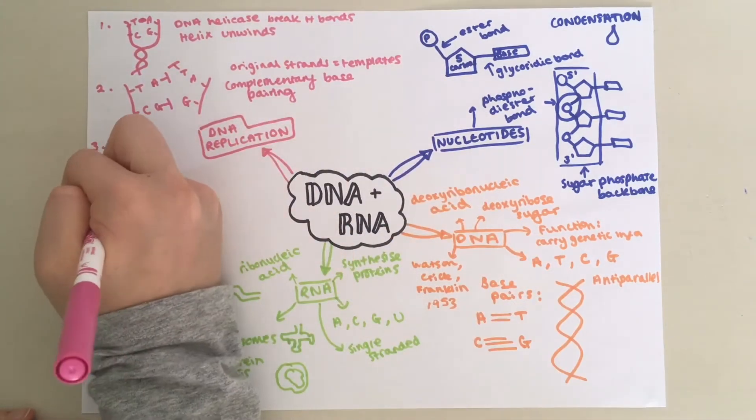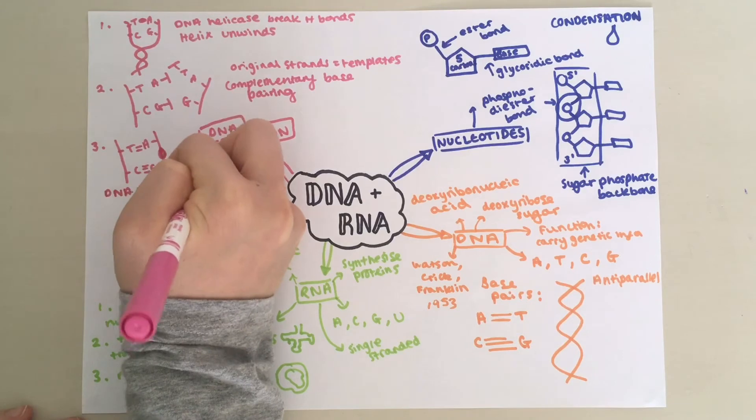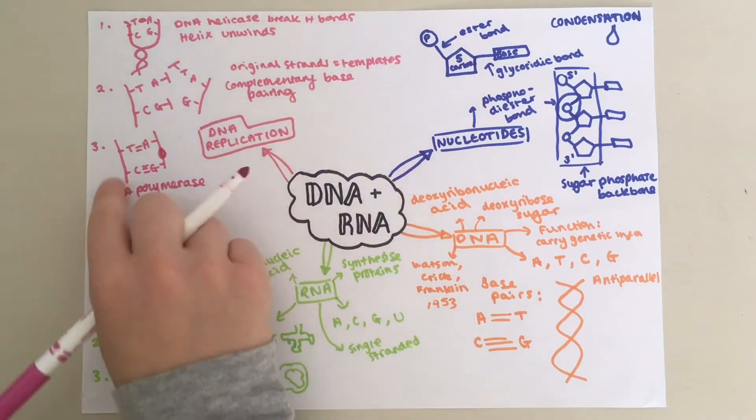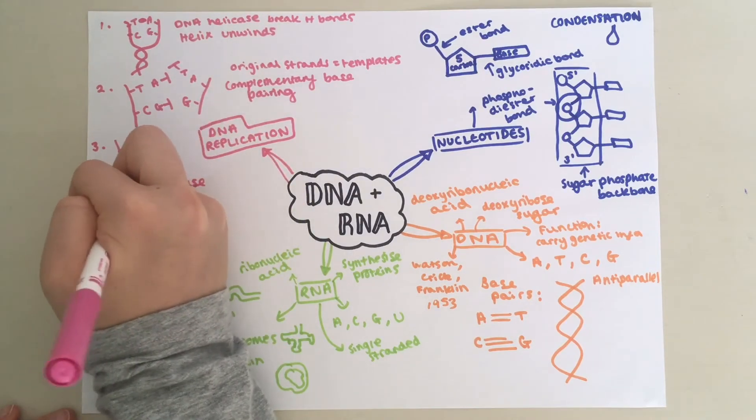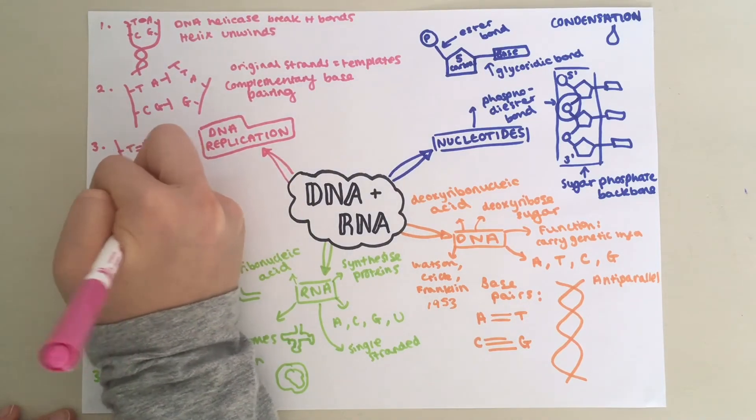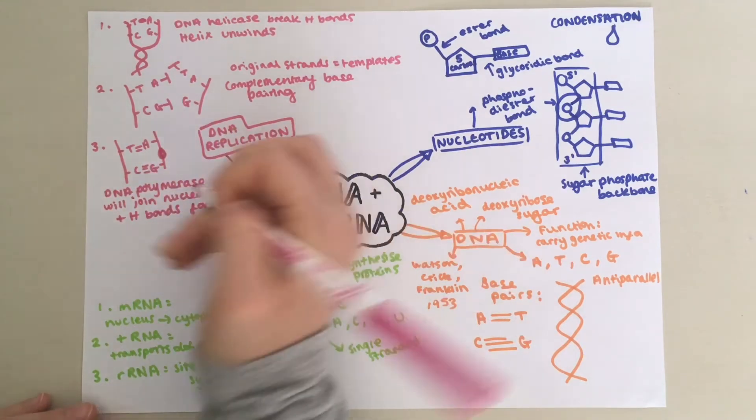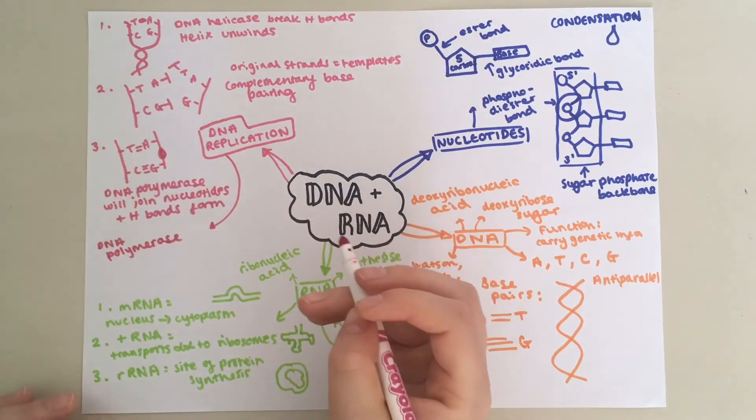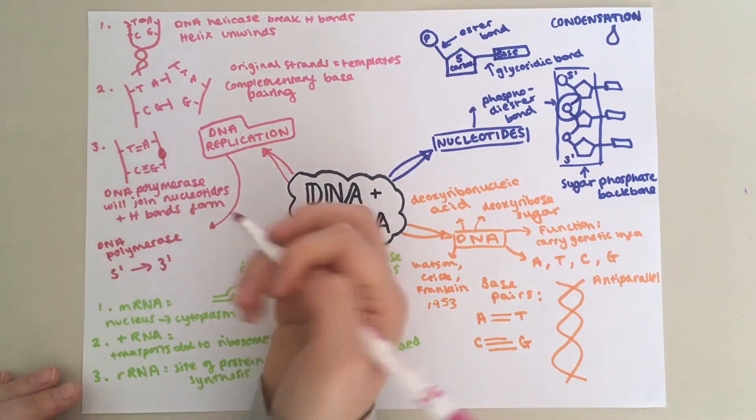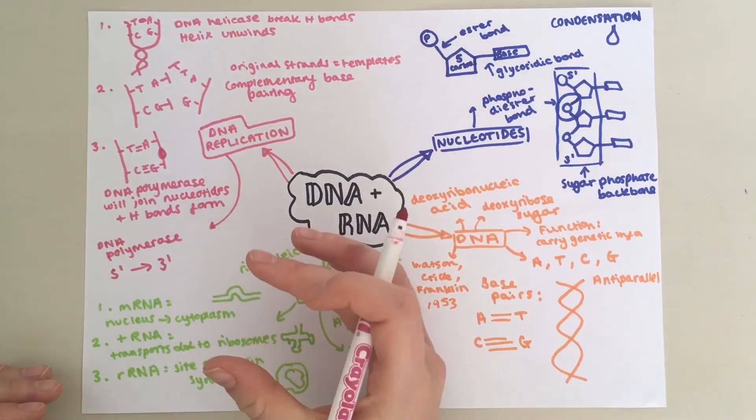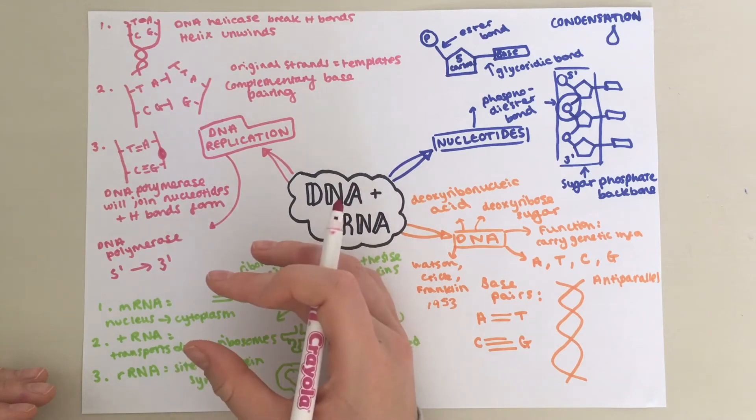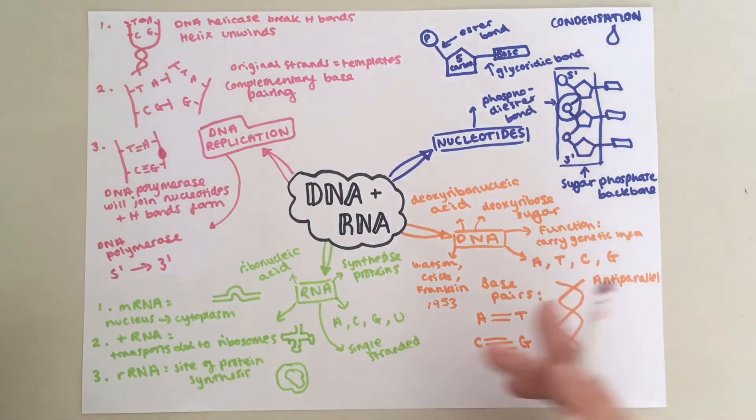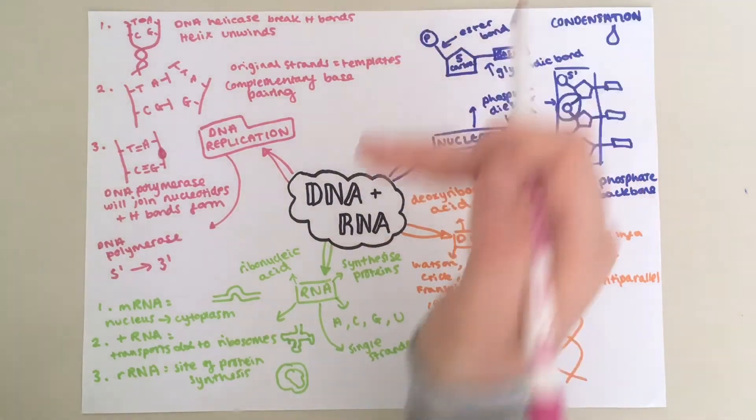Step three. DNA polymerase, which is an enzyme, will catalyze the condensation reactions that join the nucleotides together in the new strand and also hydrogen bonds will form between the complementary base pairs. It's important to note that DNA polymerase will only work in one direction. It will only work from the five prime end to the three prime end of the newly forming strand. This is because the active site of DNA polymerase is complementary to the three prime end of the newly forming strand. And since DNA has this anti-parallel structure, that means DNA polymerase will work in different directions on the two newly forming strands.